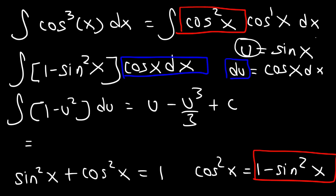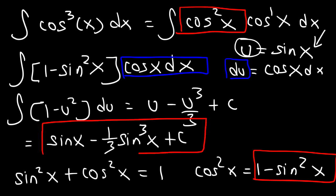So, now, let's replace everything, all the u variables, with sine x. So, this is going to be sine x minus 1 third sine cube x plus c. And so, this is the answer. This is the integral of cosine cube. It's sine minus 1 third sine cube plus c.